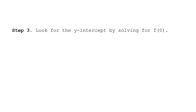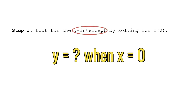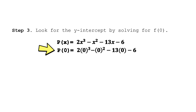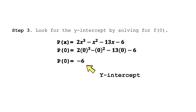For step three, we find the y-intercept by solving for f(0). The y-intercept is the value of y when x equals 0. Substituting x=0 into the polynomial function and simplifying, we get f(0) = −6. Therefore, negative 6 is the y-intercept.